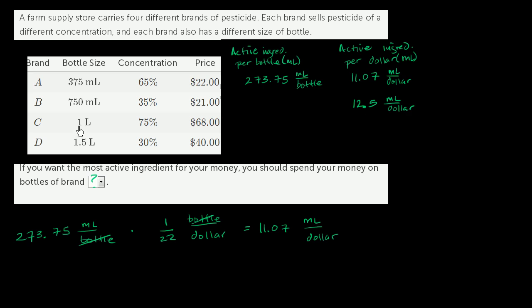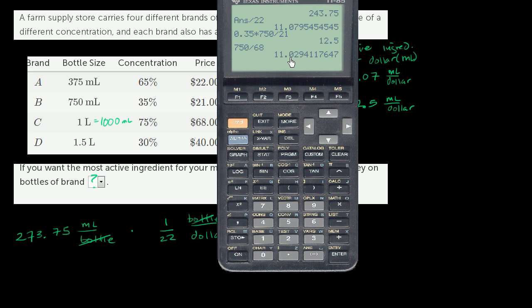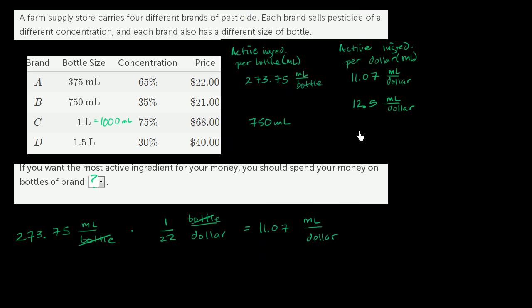Now this next one, they give us one liter. But we know that one liter is equal to 1,000 milliliters. 75% of that is going to be active ingredient, so we're going to have 750 milliliters of active ingredient. And it's going to cost $68, so we just divide this by 68. And we get 750 milliliters divided by 68, which gets us $11 and, if we round, 3 cents. Or not, we're in milliliters—11.03 milliliters per dollar. I have to be very careful. This is milliliters per dollar.